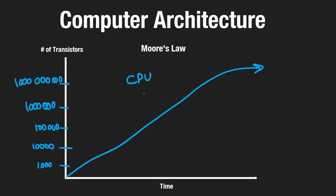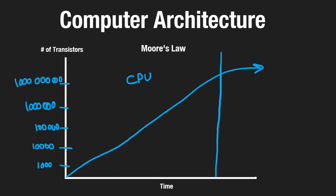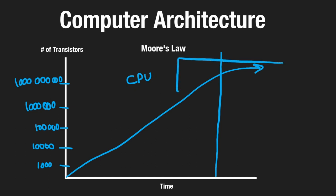We can't infinitely scale a single CPU — that's one limitation of an individual computer. We've had distributed systems well beyond the point of reaching single-CPU limitations. Combining multiple computers solves bigger problems because individual computers do have limits. Moore's Law is beginning to break, and there are other benefits of distributed systems we'll cover later in the course.